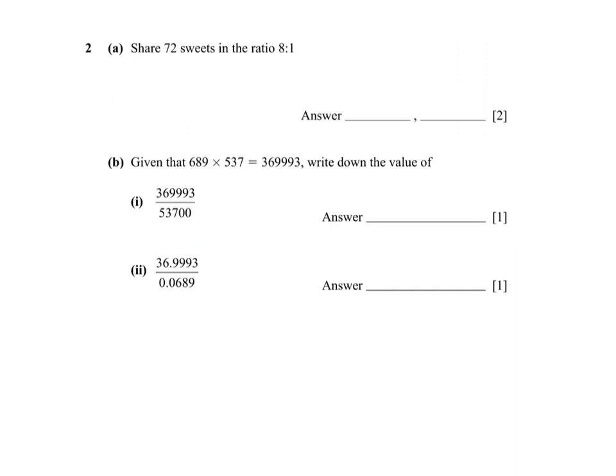To divide 72 sweets in the ratio 8 to 1, that tells us that one person is going to get 8 parts. And the second person is going to get 1 part. So altogether that is 9 parts. If we do 72 divided by 9, we get 8. Which tells me that the first person gets 8 times 8, 64 sweets.